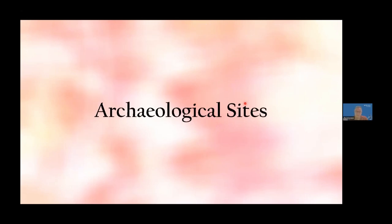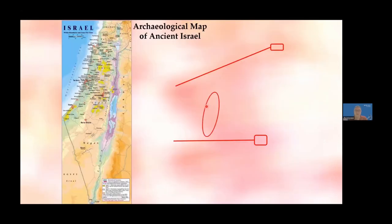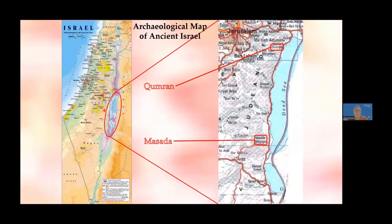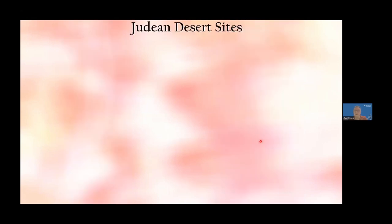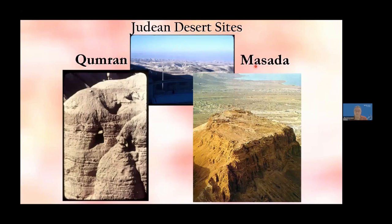Professor Koren describes the various archaeological sites he has worked with — primarily in the eastern Mediterranean region around ancient Israel. Key sites include Phoenician dyeing installations, Qumran (associated with the Dead Sea Scrolls), and the famous Masada fortress. He notes that organic materials survive well in desert environments like the Judean desert and other arid regions.